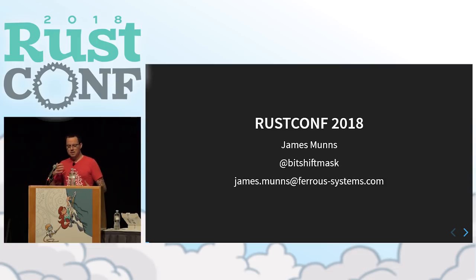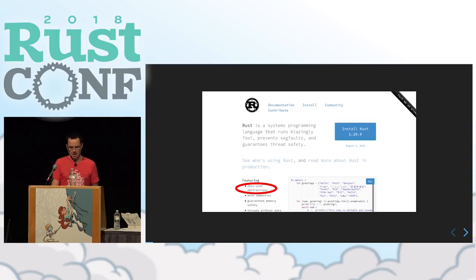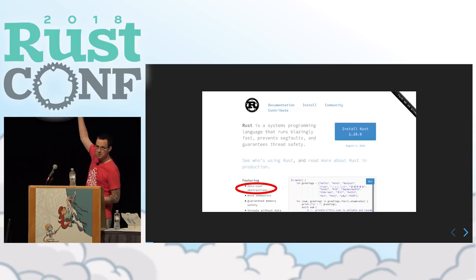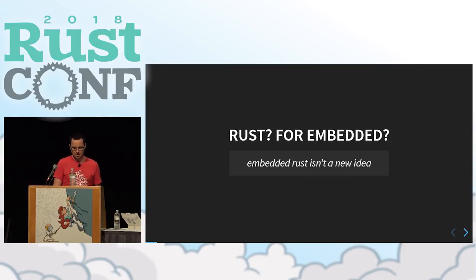The concept of getting something for nothing — or as it's more commonly called, zero-cost abstractions — is not super new to the Rust compiler. In fact, if you look at the website, it's literally the first feature they list. Zero-cost abstractions are something really intrinsic to the Rust language itself.